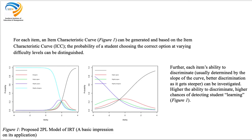By doing this we can identify the item characteristic curves of each item, which shows the probability of a student choosing the correct option at varying difficulty levels. I have given two images here — though these are from polytomous data from my previous research, included for illustration. The basic understanding is that you can identify which items are difficult and which are easy, and which items can demonstrate student learning better than others.